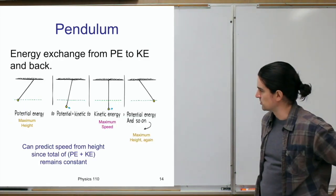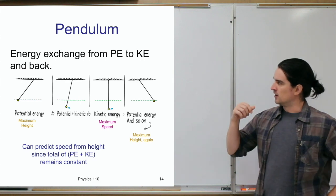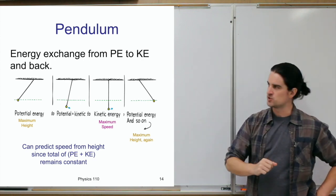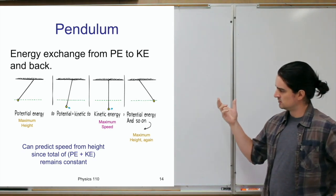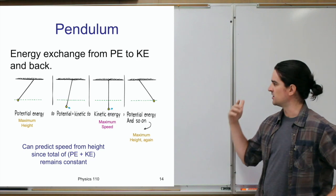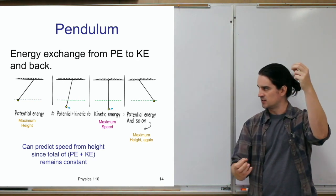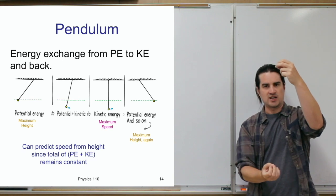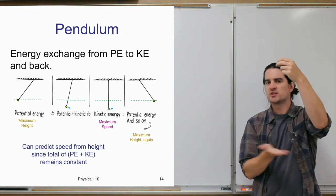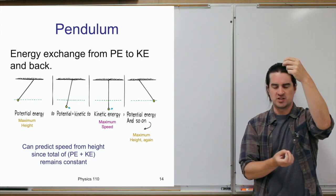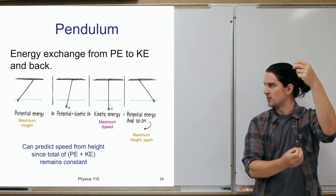That 1200 joules went into heating the bowling ball, heating the ground, and making the sound of the crash. The total energy in that situation is still constant. Now let's look at a couple of examples of conservation of energy in action — the exchange between potential and kinetic energy. We're still really just talking about gravitational potential energy.